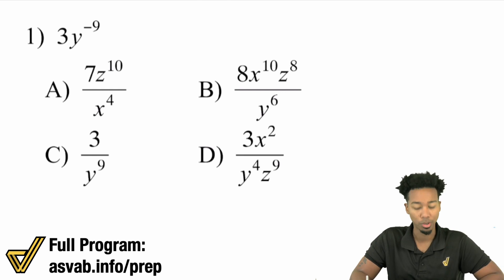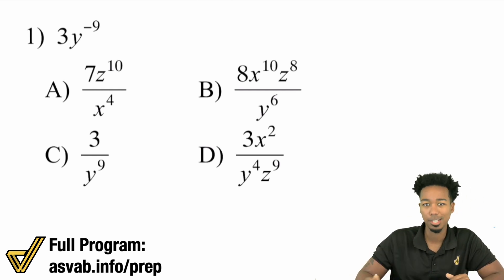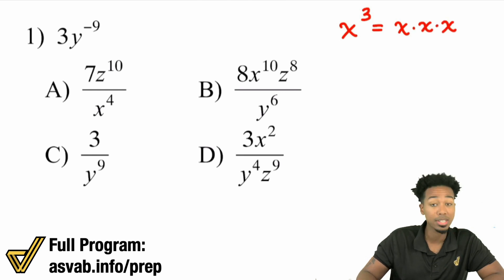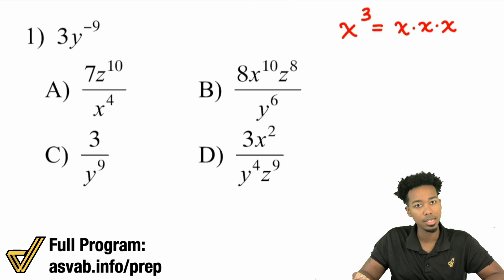Long story short, here's the easiest way I can explain it. Remember this, my party people, when you have something like, let's say, x to the power of three, remember that that means x multiplied by itself three times. Now, let me show you what its opposite is.